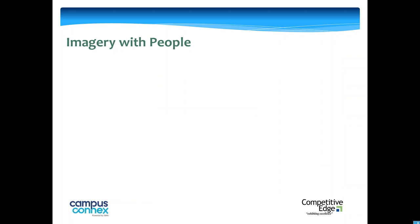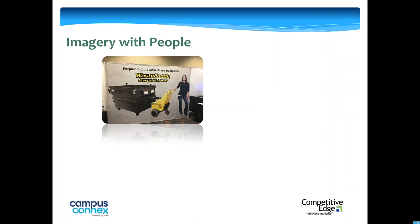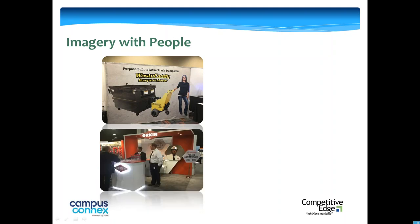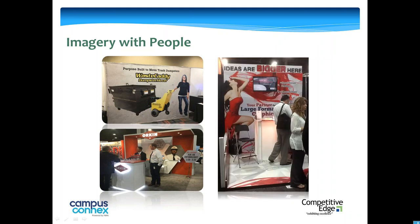Another little trick on imagery we've learned over the years is that people are people-watchers. If this company were to just have the waste caddy dumpster by itself, maybe 40 out of 100 people passing by would look at it. By adding a person in the image, that might jump up to 60 to 70 to 80 that look at it. So put people in your imagery. Do you have people in your imagery, and if not, how could you integrate people to get more attention?